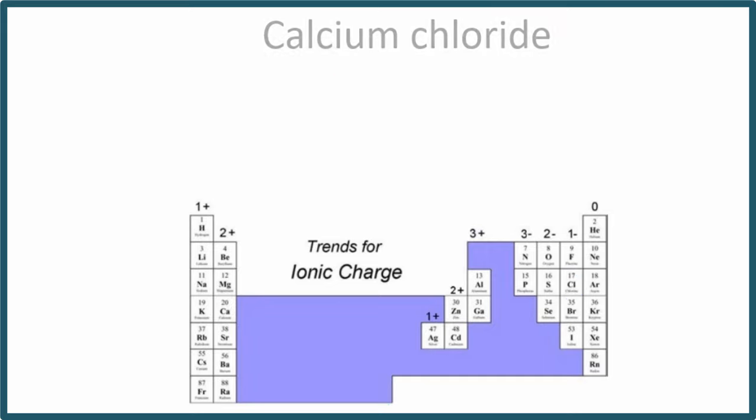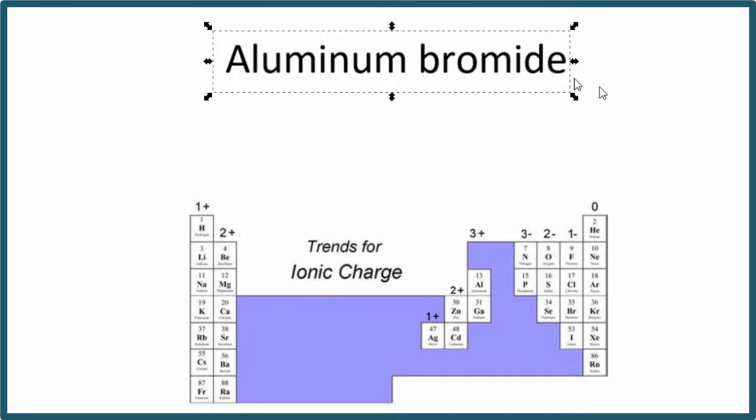So now you try one. Pause and write the formula for aluminum bromide. So for aluminum bromide, we have Al and then Br.